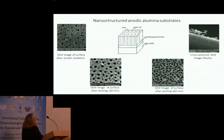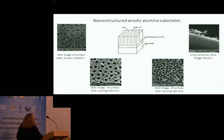Nanoporous anodic alumina has a self-ordered nanoporous structure that can be formed by simple anodic oxidation of aluminum. The pore size can be easily regulated from nanometers to hundreds of nanometers by changes of electrolytes, regimes of oxidation, and by chemical etching for widening of pores.